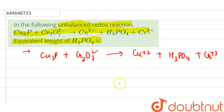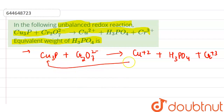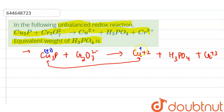Three species are undergoing oxidation and reduction here. Copper is getting oxidized from the plus one state to the plus two state, so the change in electrons for copper is one electron.